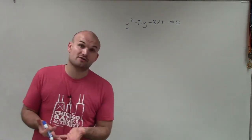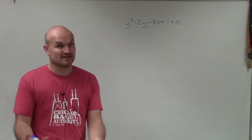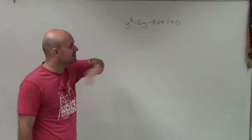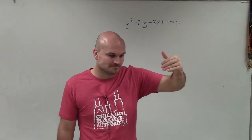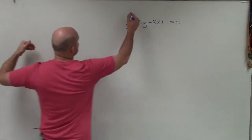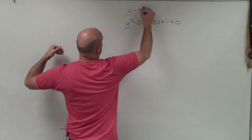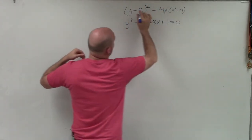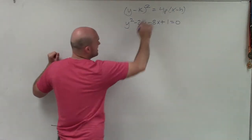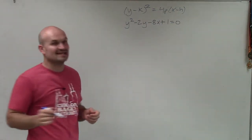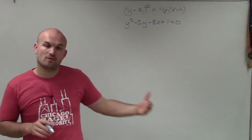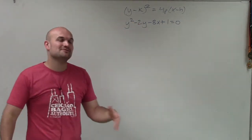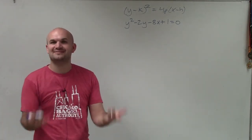First of all, I need to identify where the vertex is. This format is not going to help me out very much, because we want to write this in the form: (y minus k) squared equals 4p times (x minus h), where h and k represent the vertex, and p represents the distance from the vertex to the focus. So how do we go from here to there? We have to do our lovely operation of completing the square.